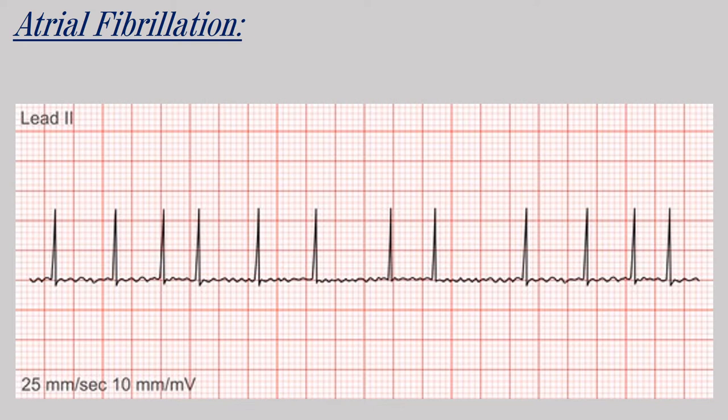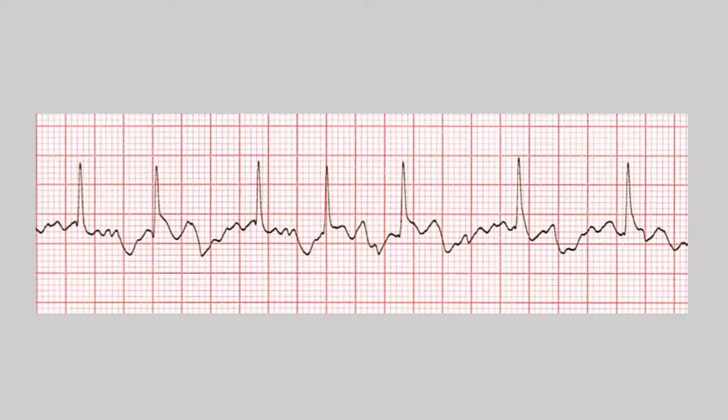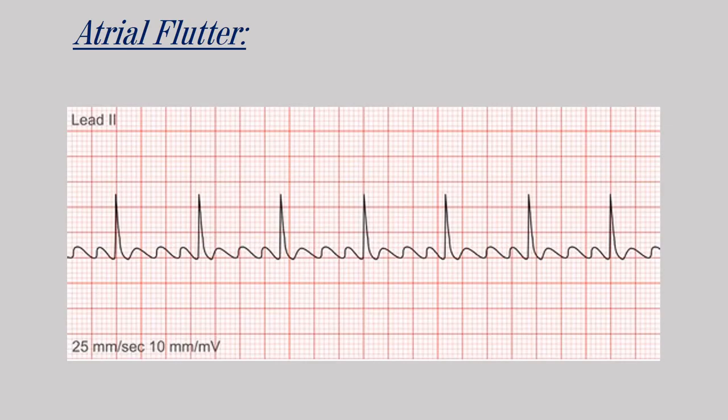Atrial fibrillation is the most common type of dysrhythmia. The atrial muscles twitch without forming a proper contraction to pump blood to the ventricles. The heart rate is irregular and we cannot find a uniform formed P wave.